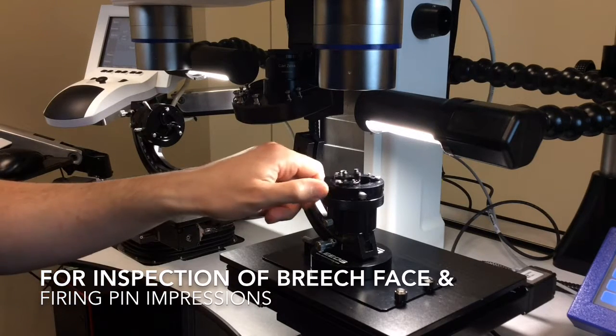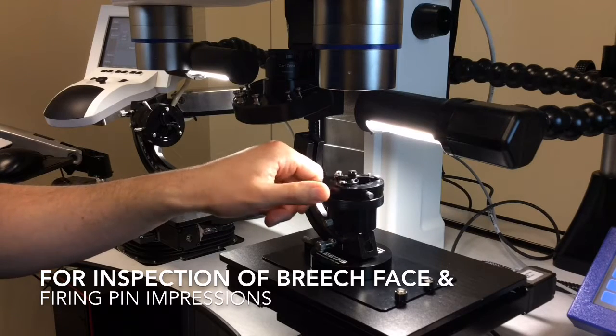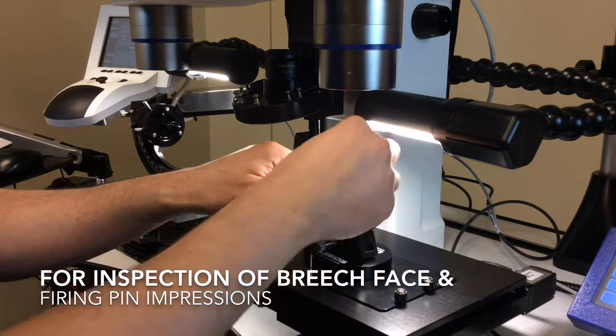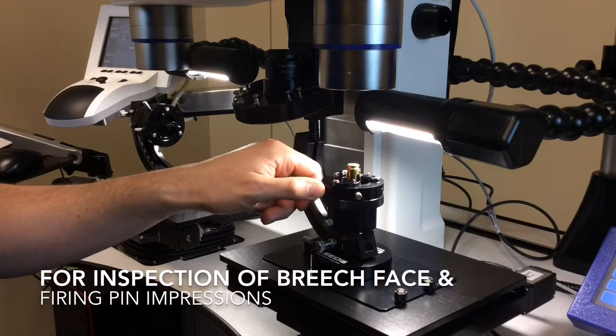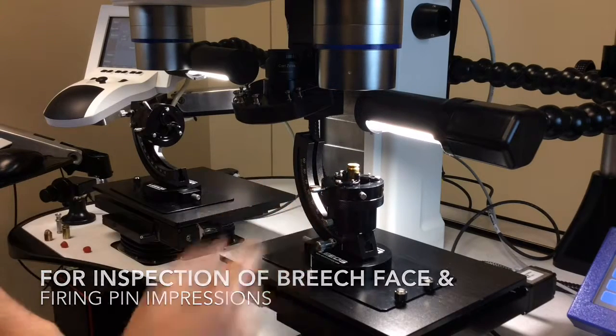The way the holder works is that it has these movable Delrin jaws that when open, I can insert a cartridge case, and not only will it hold the cartridge case, but it will also center the cartridge case in the middle of the holder.